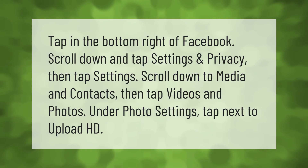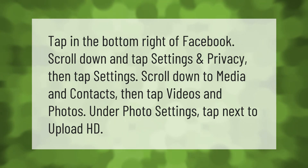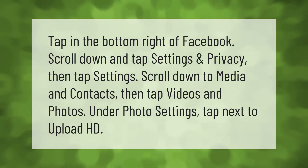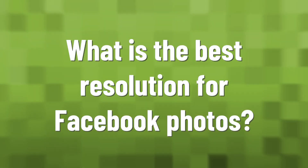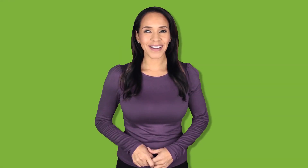Tap in the bottom right of Facebook, scroll down and tap Settings and Privacy, then tap Settings. Scroll down to Media and Contacts, then tap Videos and Photos. Under Photo Settings, tap next to Upload HD.